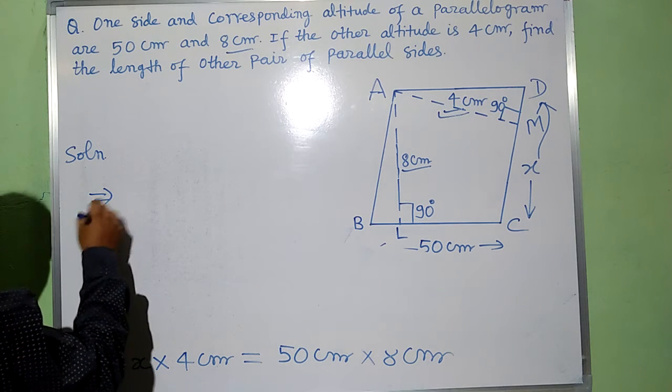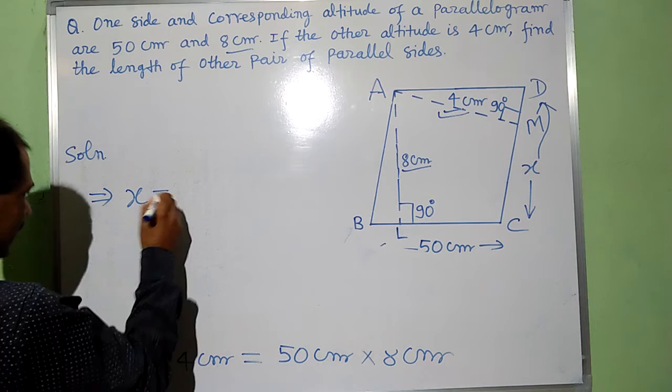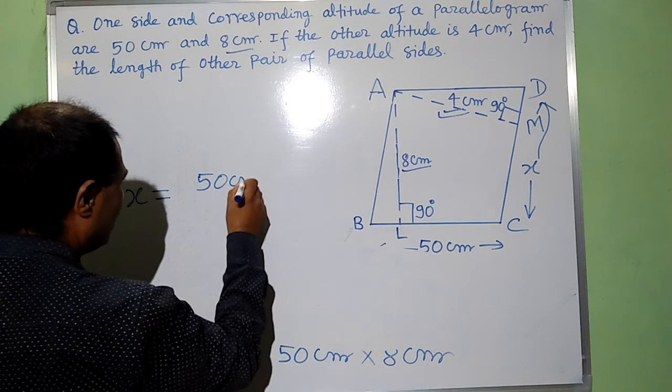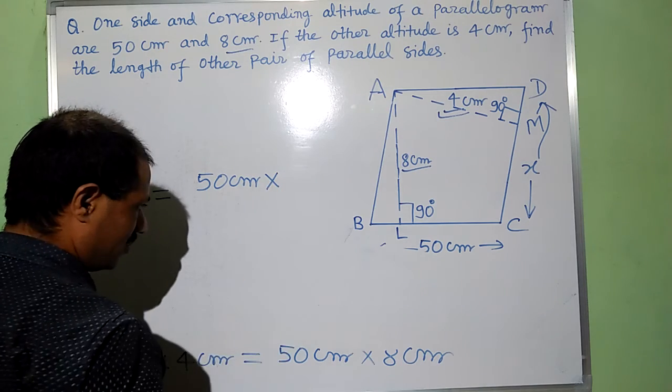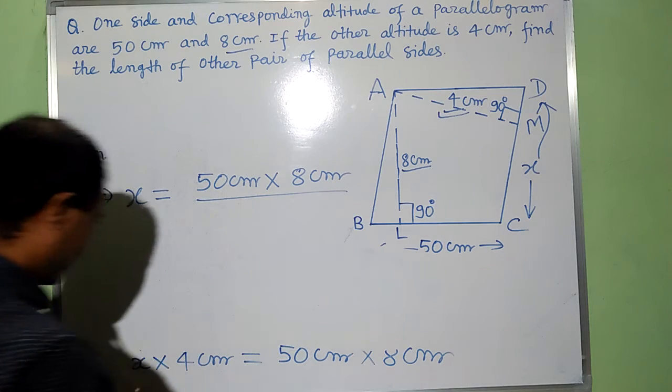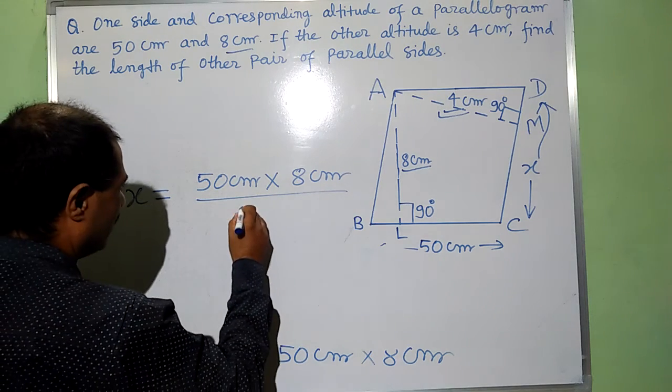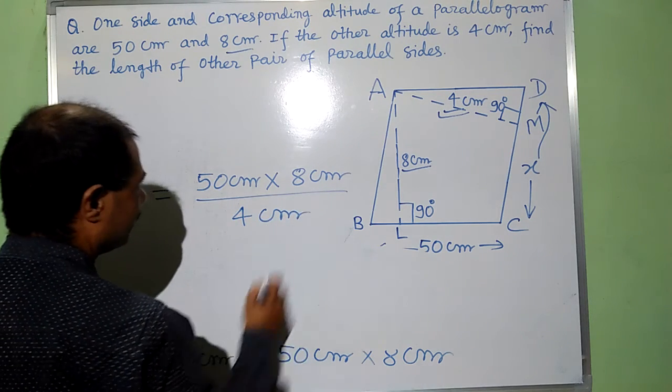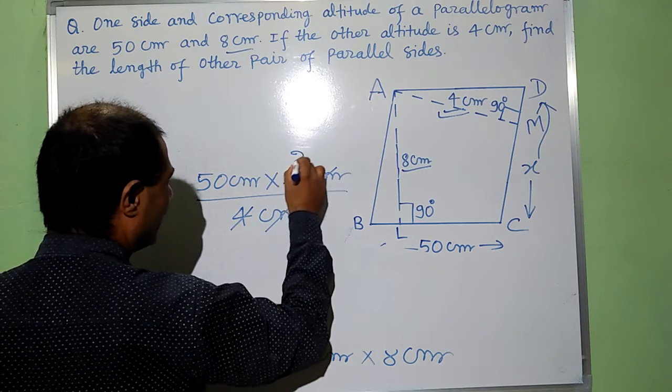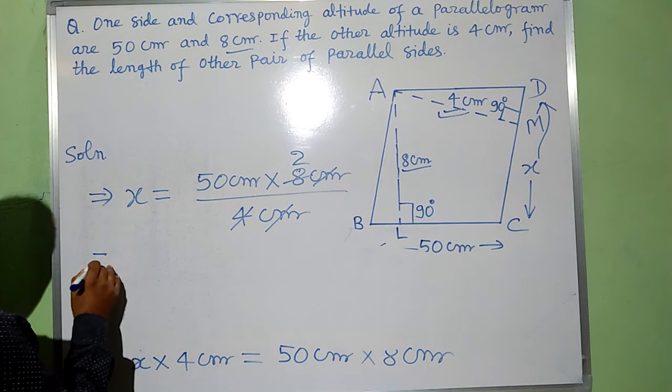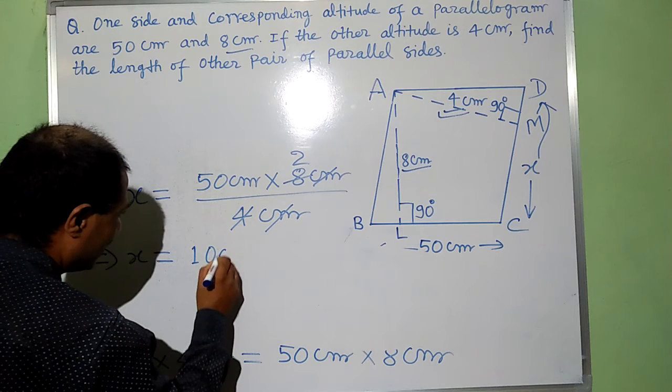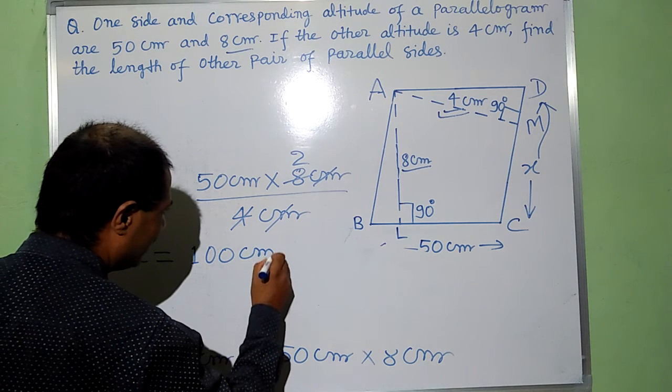This implies that X is equal to 50 cm into 8 cm by 4 cm. Here cm will be cancelled, 4 to the 8, implies that X is equal to 100 cm. This is length.